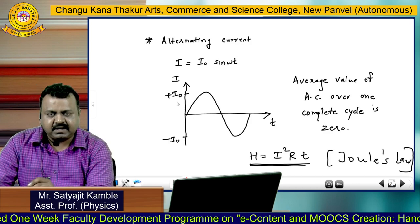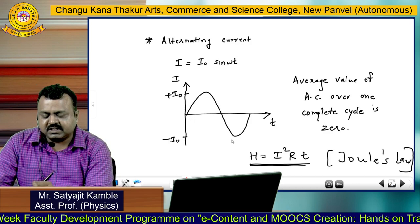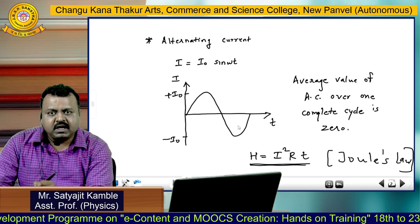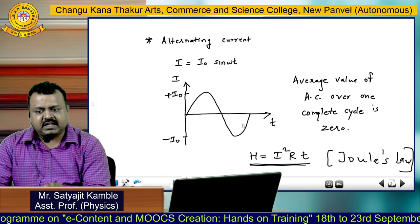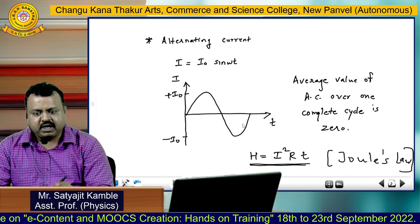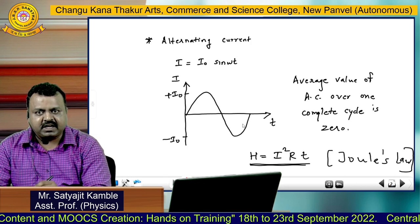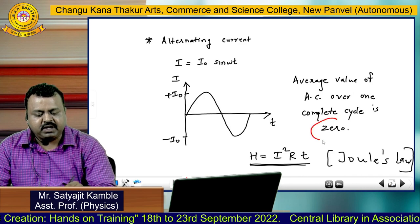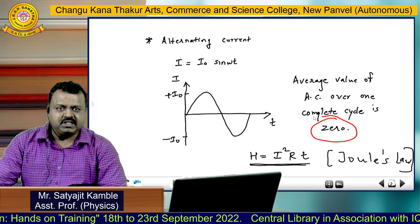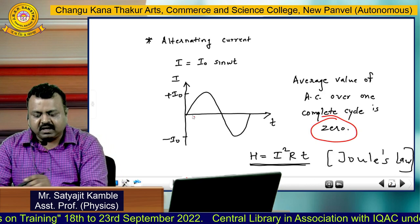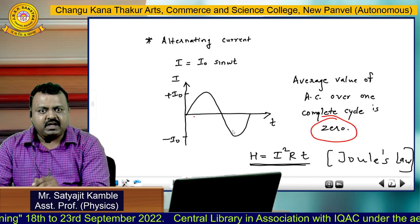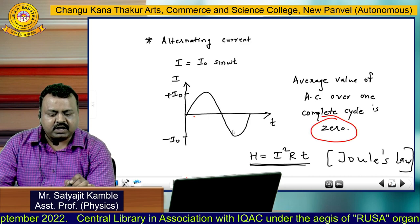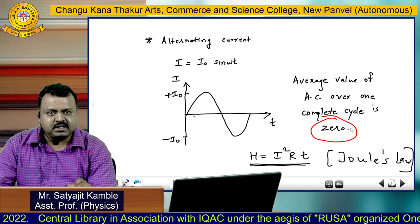Alternating current is a sinusoidal current. It has a positive half cycle as well as a negative half cycle. And therefore, if we take the average value of this alternating current over a complete cycle, it is going to be zero, because the positive half cycle and negative half cycle cancel each other. So this is one important point: average value of alternating current over a complete cycle is zero.